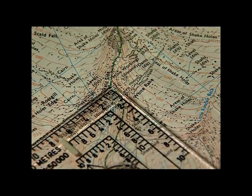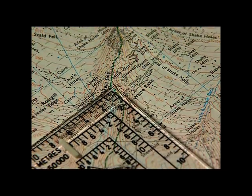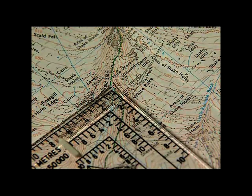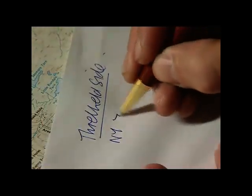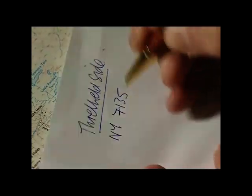Some compasses have measuring rules known as ROMA scales to help read grid references on 1:25,000 and 1:50,000 maps. You place the edge of the compass on the location you want to record and then use the scales to read off the precise position within the kilometer square.